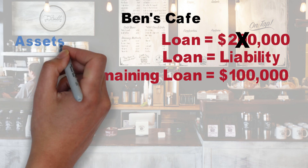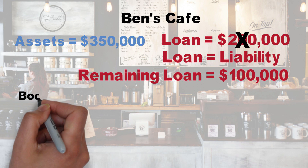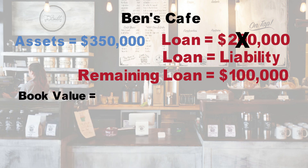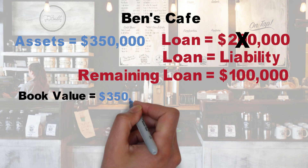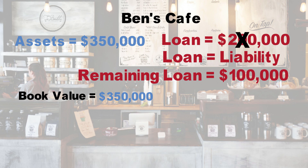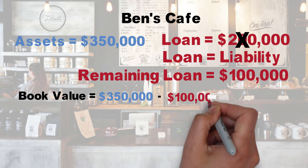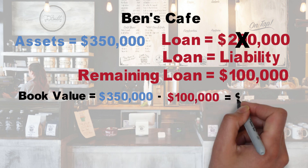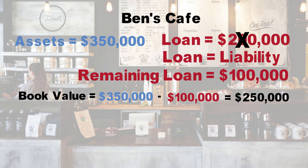The value of all of his assets is $350,000. To find his company's book value, we take his assets, $350,000, and subtract his liabilities, $100,000. Ben's Cafe's book value is $250,000.